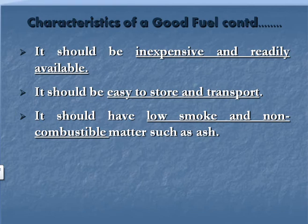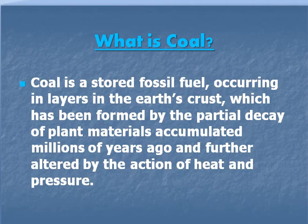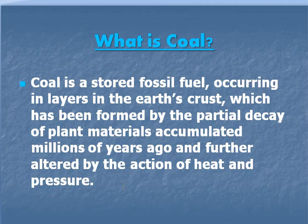Now we will look at what coal is. Coal is a stored fossil fuel occurring in layers in the earth's crust, formed by the partial decay of plant materials accumulated millions of years ago, altered by the action of heat and pressure. Coal is called a fossil fuel because it is a transformed part of a living organism — specifically prehistoric plant material transformed underground.